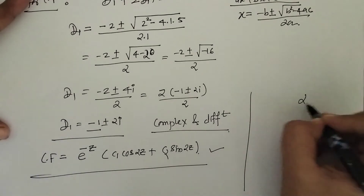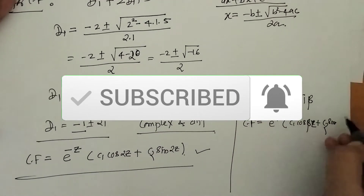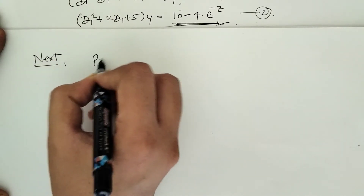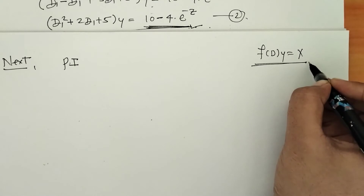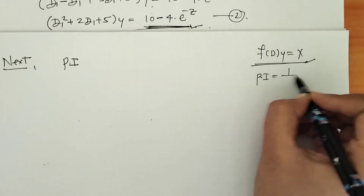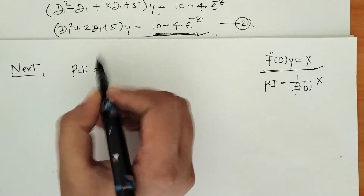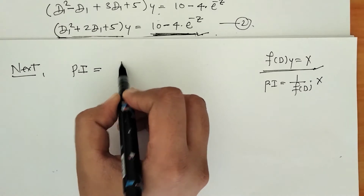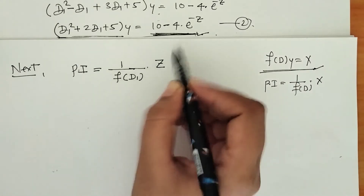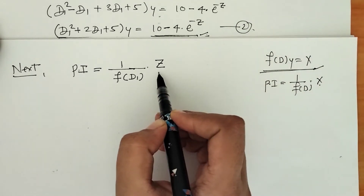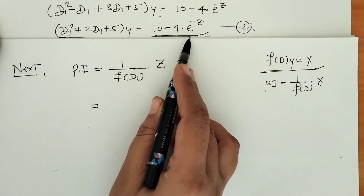The CF is c1 cos(2z) plus c2 sin(2z), since the roots are complex of the form alpha plus minus i beta. Now we have to find the PI. We know that PI equals 1 upon f(D1) acting on the right-hand side function. Here the differential equation is in variable z, so we write PI equals 1 upon f(D1) times the function of z. We now substitute the value of f(D1) and the function.